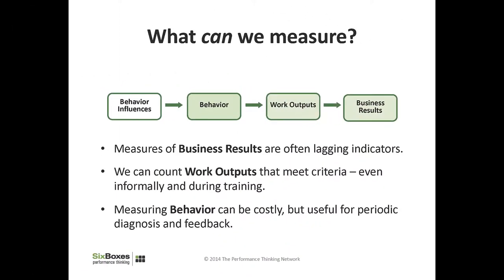I'm actually going to use a couple of visuals here. We talk a lot about measuring performance more broadly, not just the effects of learning, but of all the interventions we might do in a particular project or intervention. We use a model that we call the performance chain. It's a very simple model. It comes from Tom Gilbert's work originally, although we renamed some things in it. What we say is that performance has three elements: people behave — there's behavior, there's activity — it produces what we call work outputs, which is the phrase we use to refer to accomplishments, the valuable things that people produce. And those are valuable because they contribute to organizational or business results or possibly societal results.